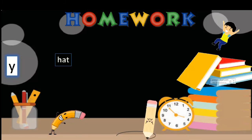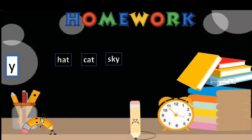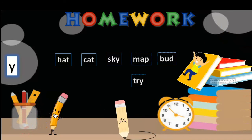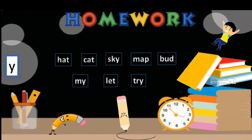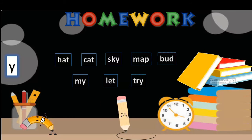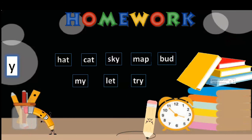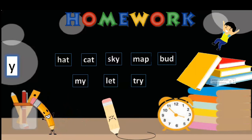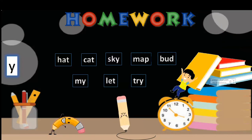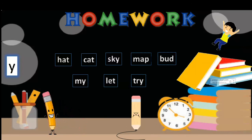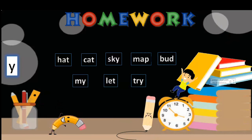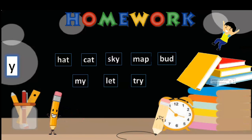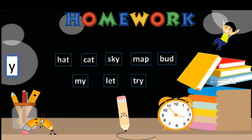Okay, moving further, next one, that is Y. Okay, H-A-T hat, C-A-T cat, S-K-Y sky, M-A-P map, B-U-D bud, T-R-Y try, L-E-T let, M-Y my. So you have to tell which word belongs to the Y vowel family. Is it hat, cat, sky, map, bud, my, let, or try? Among these you have to tell which word belongs to the Y family. Okay, so I know you are very smart, you study very well, so you will give us the answer properly. What doesn't belong to the family, you have to cut it, cross it. Okay, and whatever is the answer, you have to write it.